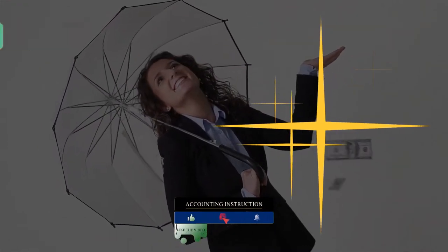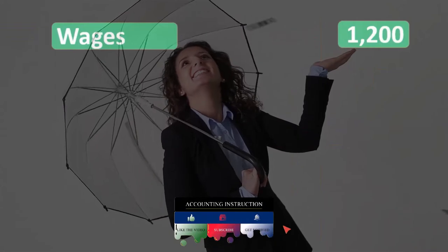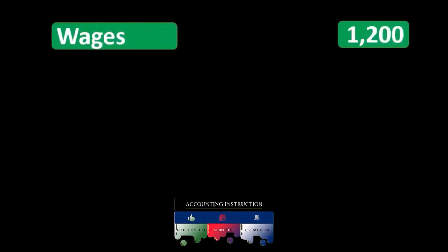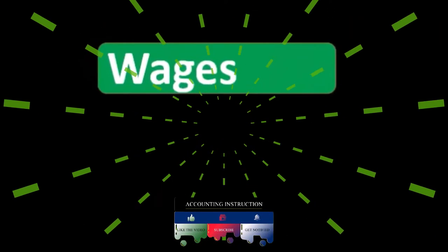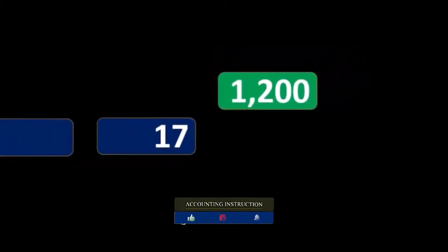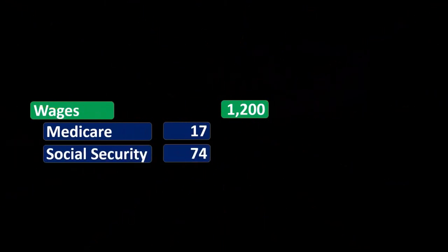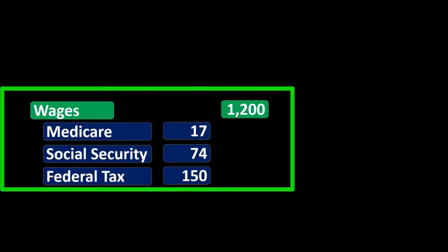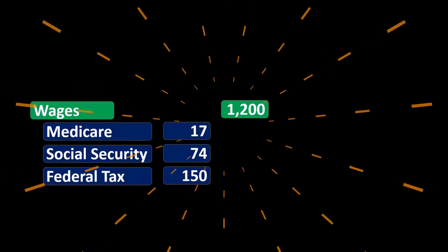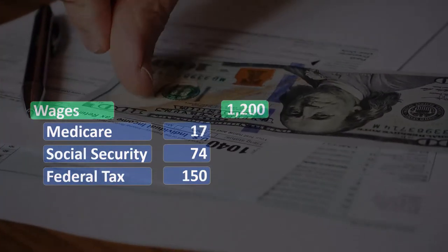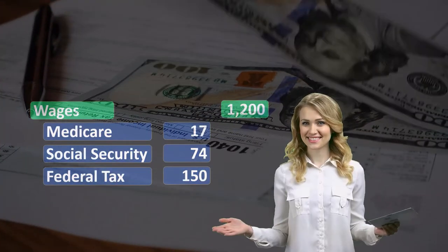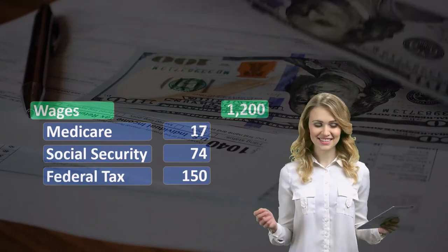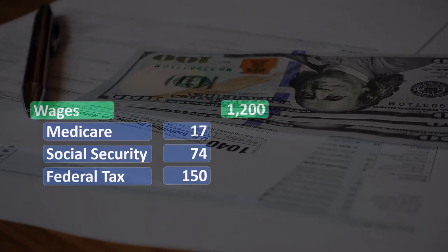So it would look something like this: we have the gross pay, what the employee actually earned, which is not what will actually be received because we will have deductions from that gross pay, including the FICA taxes of Medicare and Social Security. Then we're also going to have the federal income tax that we're going to have to withhold. These are all federal taxes — two being the FICA tax, one being the federal income tax on the employee wages, not on the employer's net income.